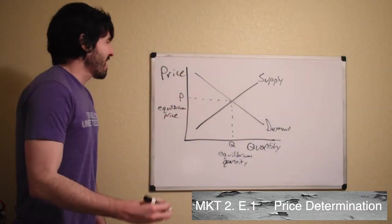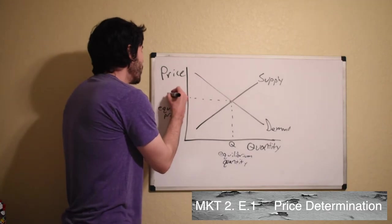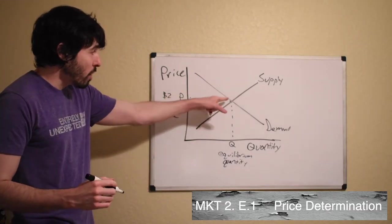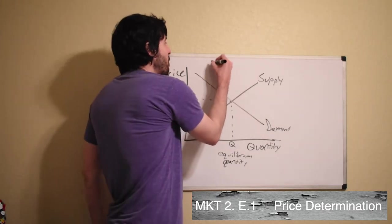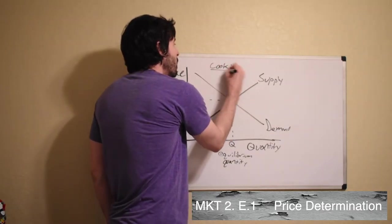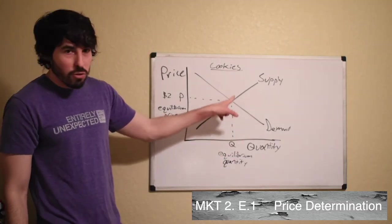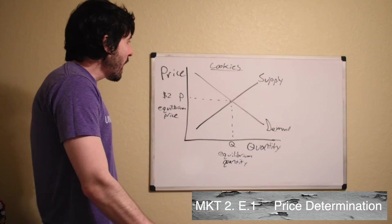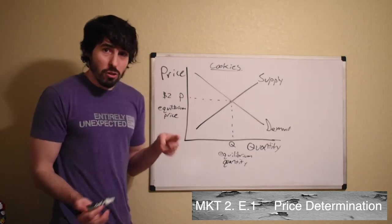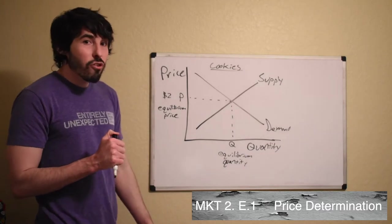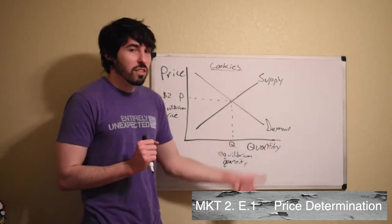So, let's say this is $2. Let's pretend that this equilibrium price right now is $2. So for $2 for a box of cookies, the amount that we want to purchase is equal to the amount that the producers want to make right now. And now, remember, like we talked about the other day, these curves can shift. Anything other than a change in price is going to cause these curves to shift.